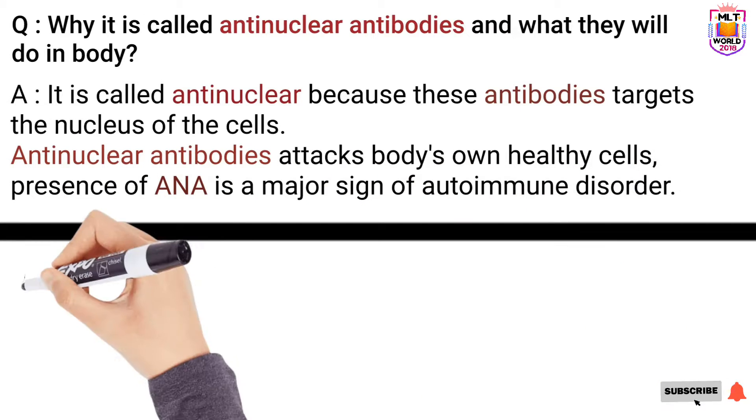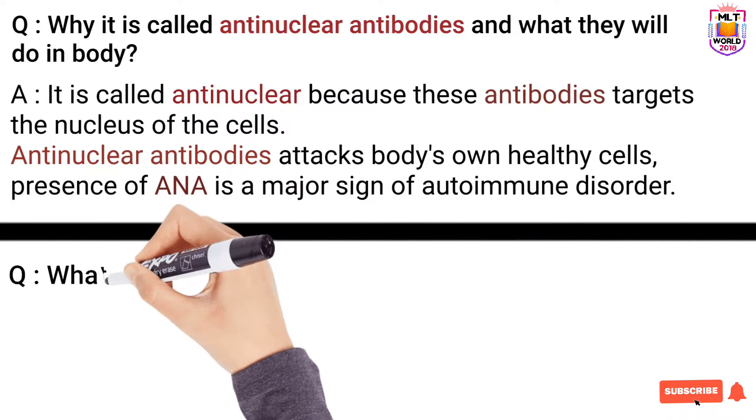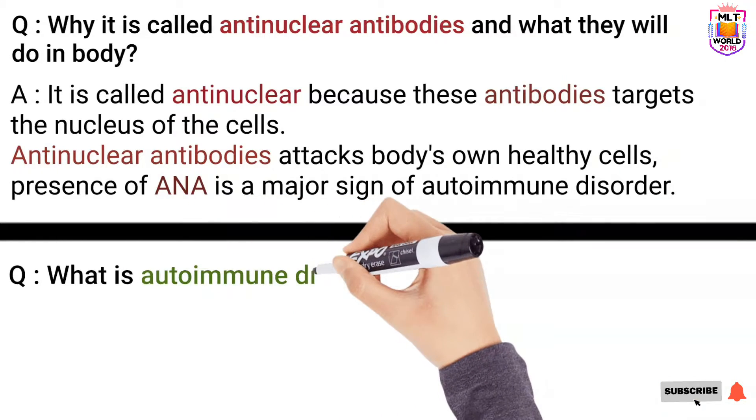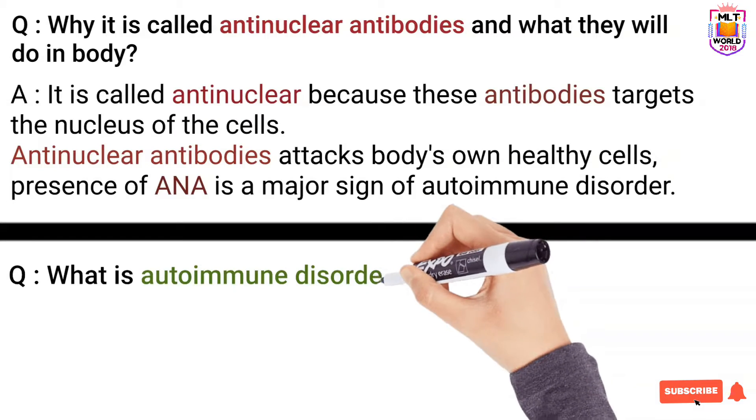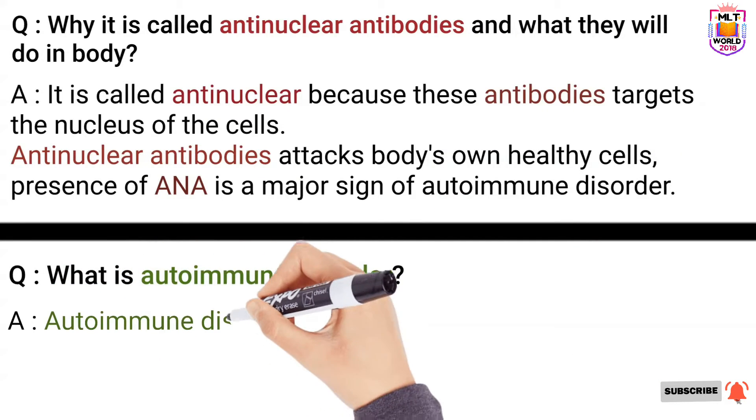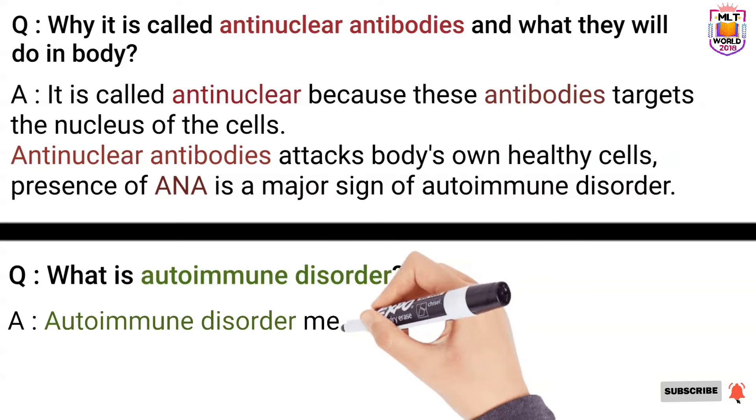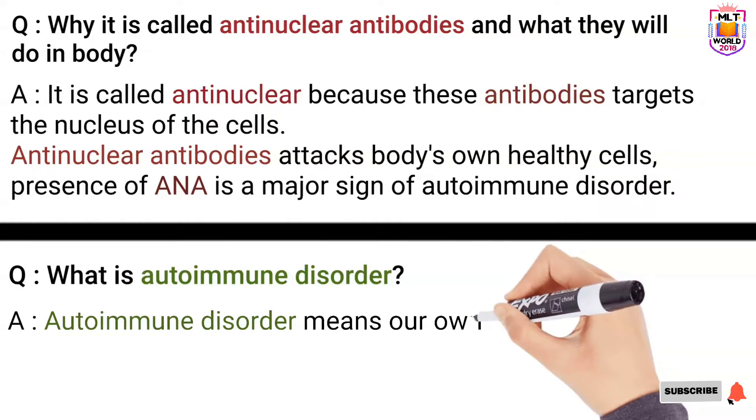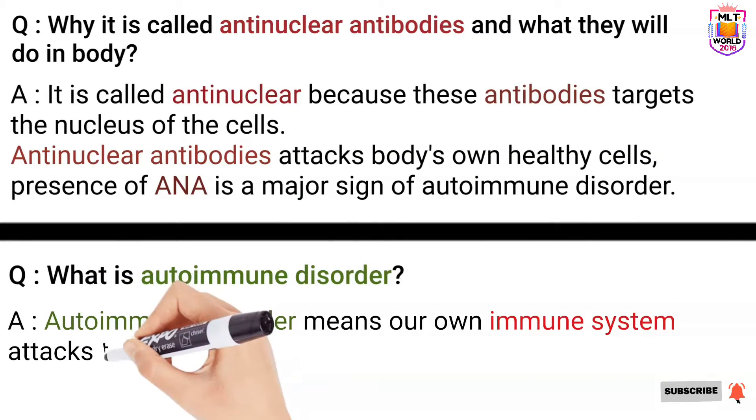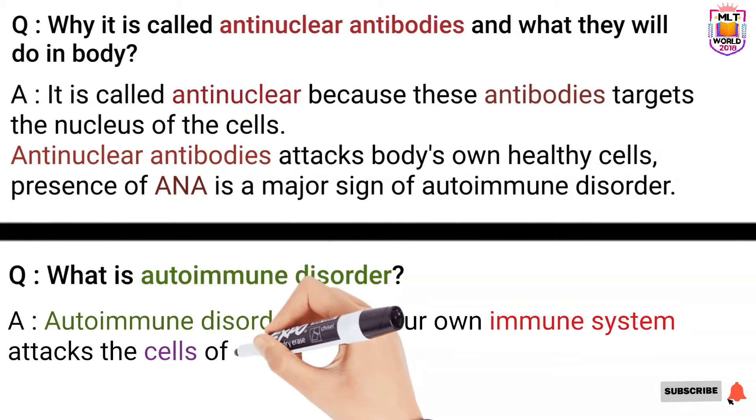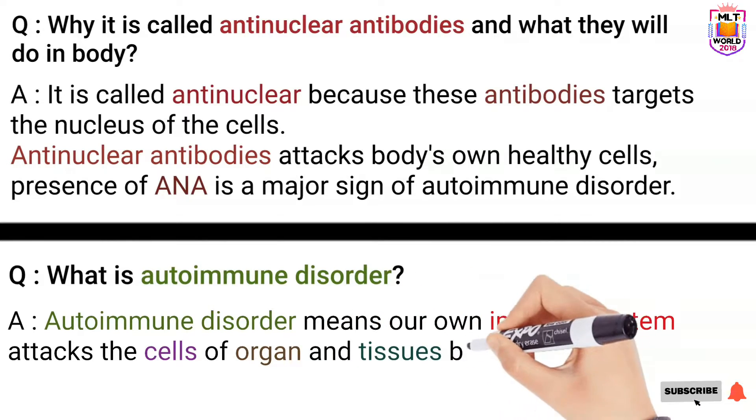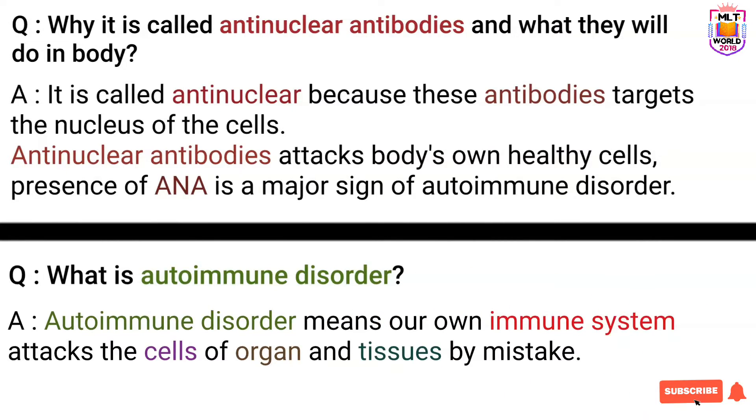So what are the autoimmune disorders? In autoimmune disorders what happens is that our body's own antibodies will attack the cells of tissue and organs and that makes damage to the organs and tissues. So we will say that our own antibodies become our own enemies. That's why these autoimmune diseases are happening and that's why doctors are recommending anti-nuclear antibody test or ANA test.